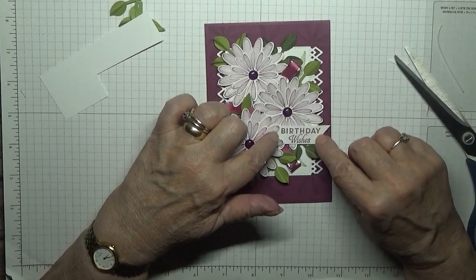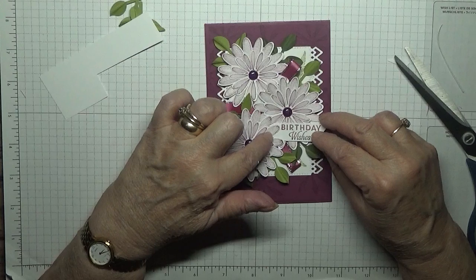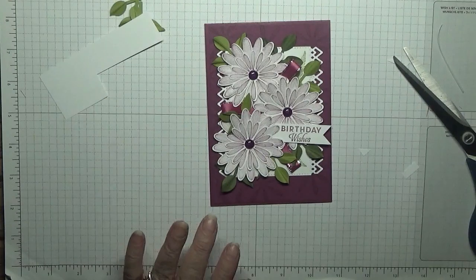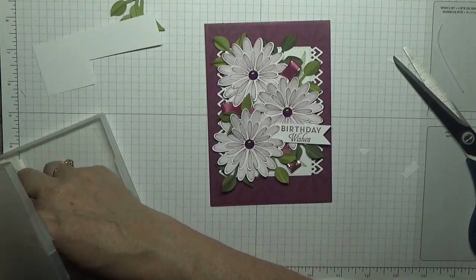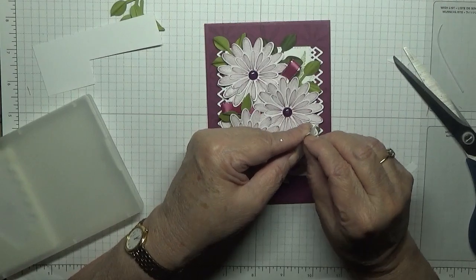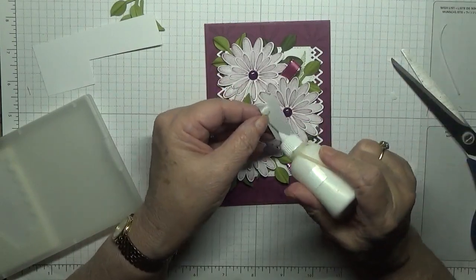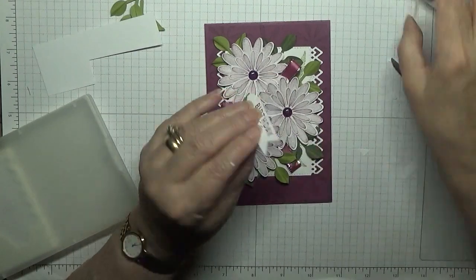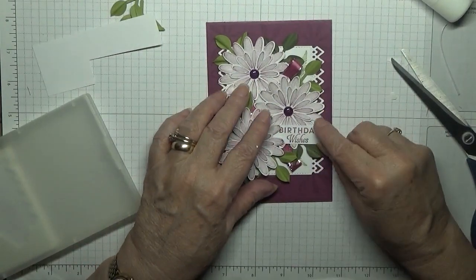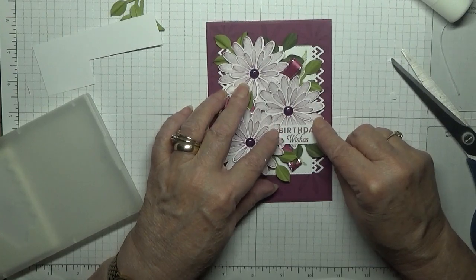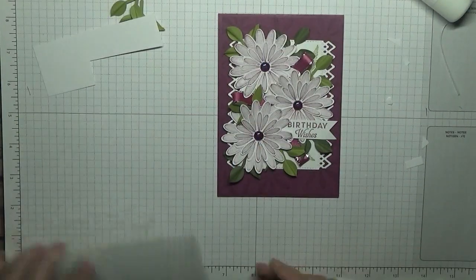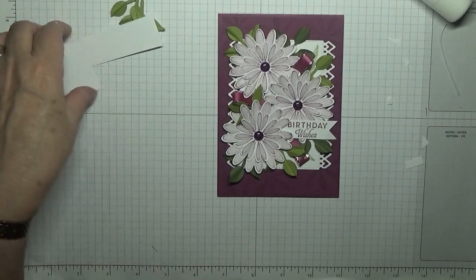Like that. And I'm going to put a dimensional under there to hold it down. Yeah, be nice. Just a little mini dimensional there. And the rest I will glue onto the daisies. There, there we are. And that is the card for today.